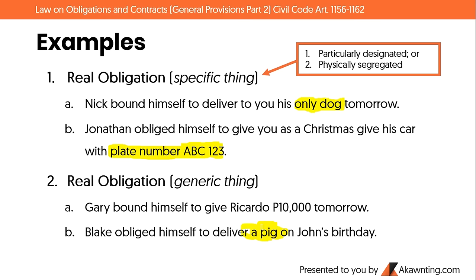To review: specific things are particularly designated or physically segregated. The dog and the car are particularly designated. Physical segregation happens when, for example, you go to a grocery store and pick out one instant noodle from the shelf and bring it to the counter — that act of segregation makes it a specific or determinate thing.